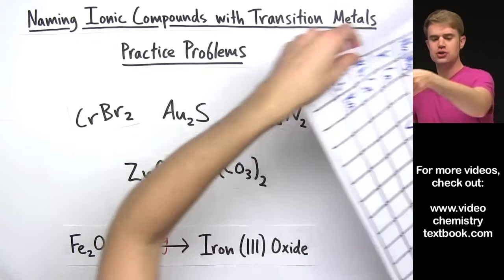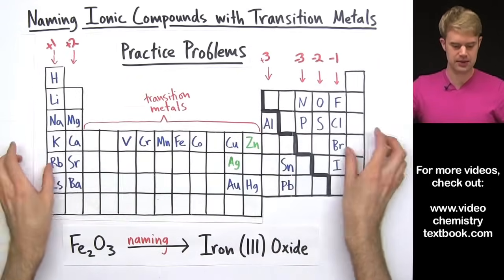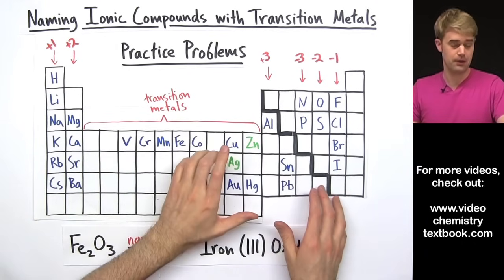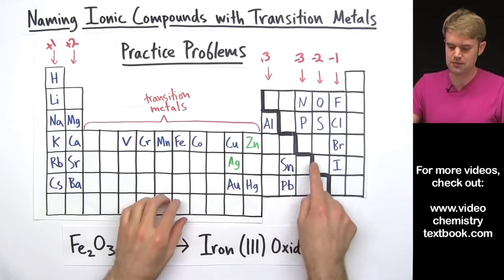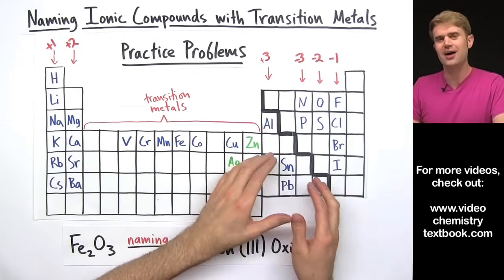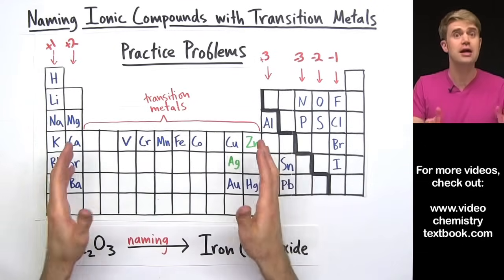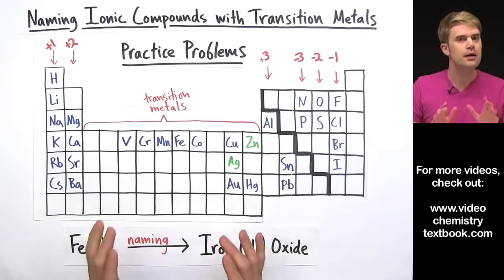Now the transition metals are the elements in this part of the periodic table here and I've written in some of the most common. I'm also going to be talking about some of the metals over here which are not technically transition metals but act a lot like the transition metals in certain ways.